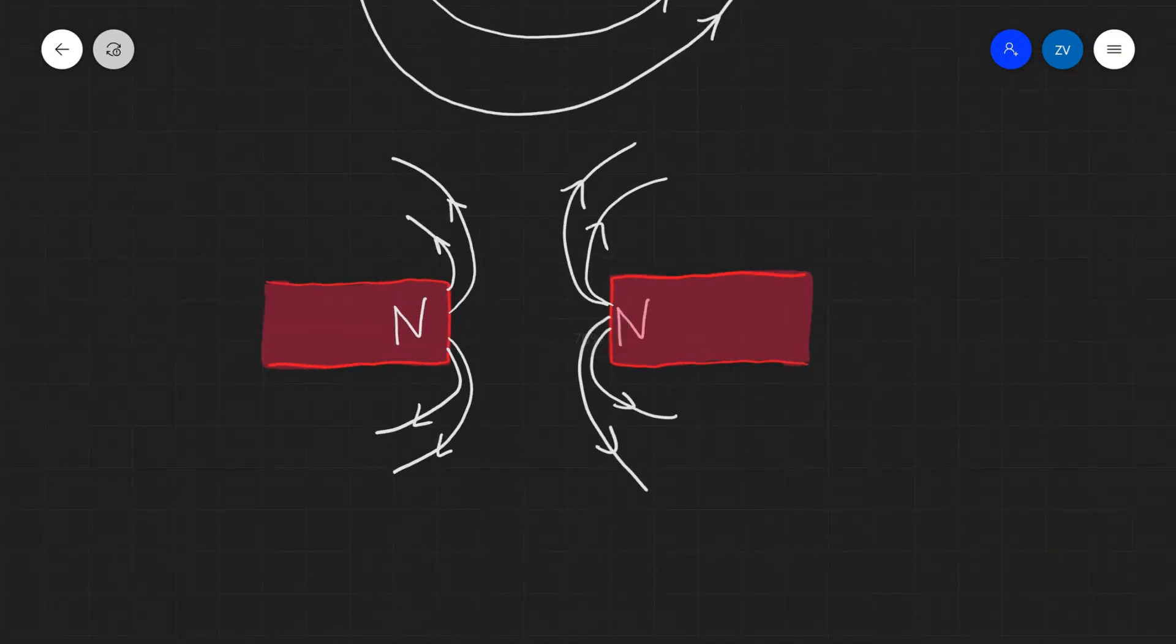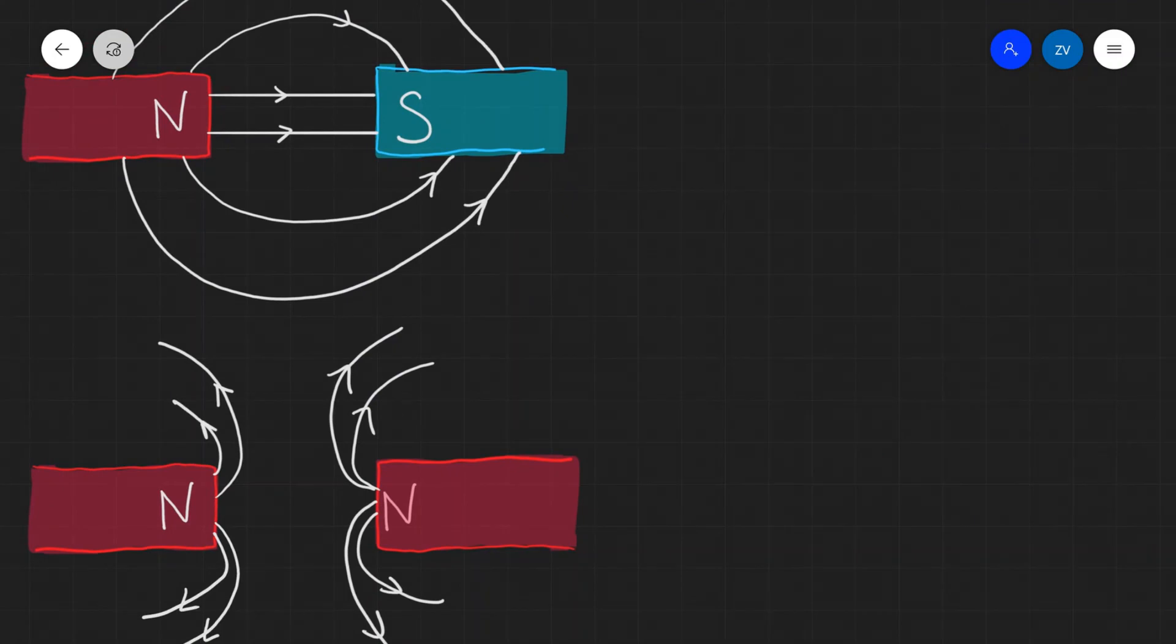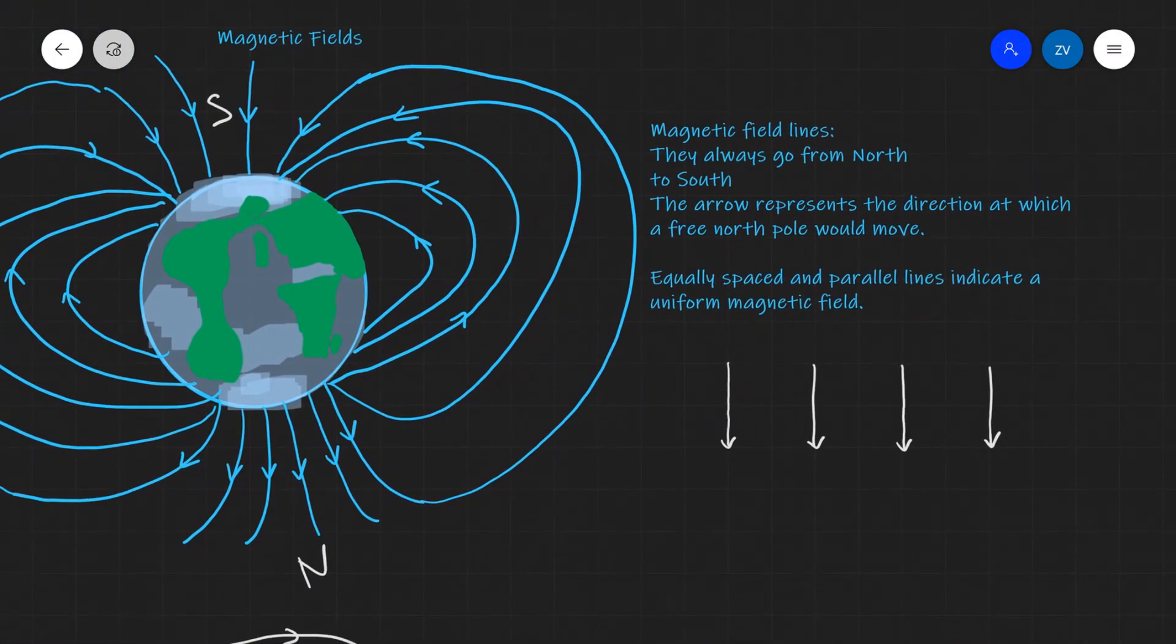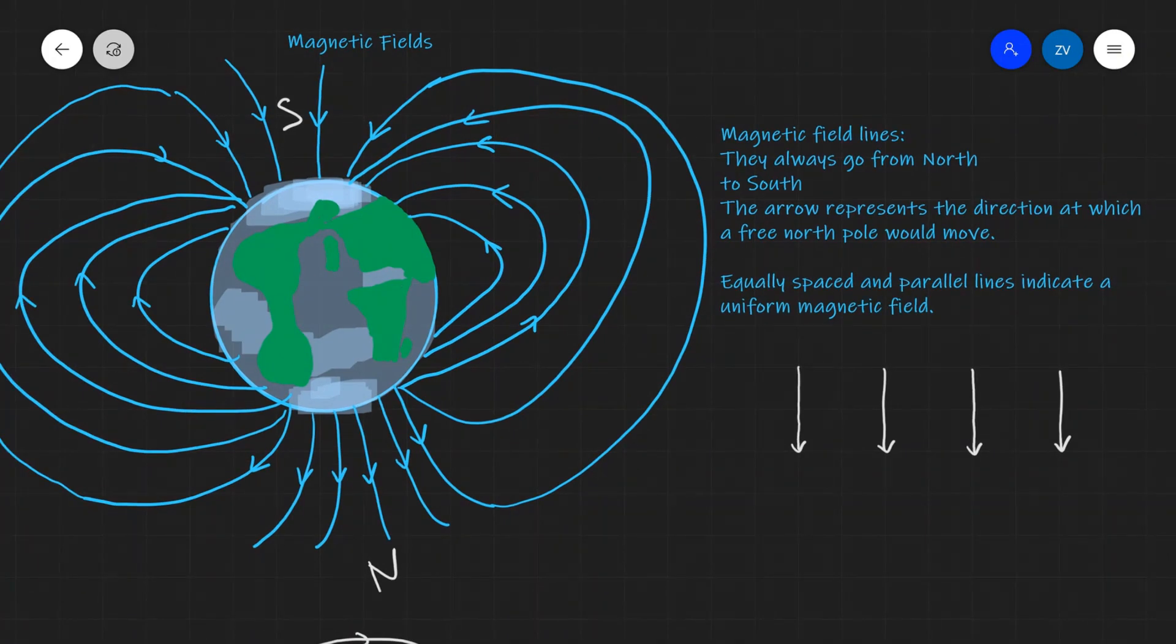Okay folks, just to summarize the rules for visualizing magnetic field lines: they always go from north to south; the arrow represents the direction which a free north pole would move; and equally spaced and parallel lines indicate a uniform magnetic field.